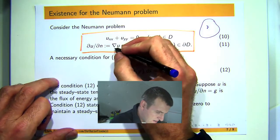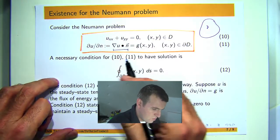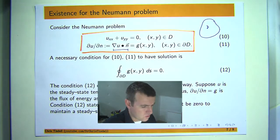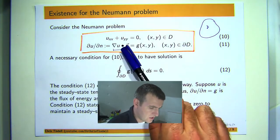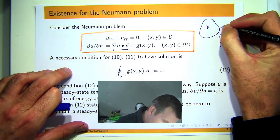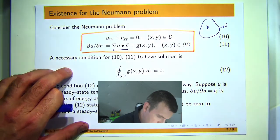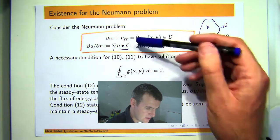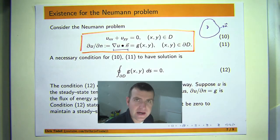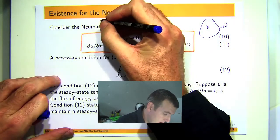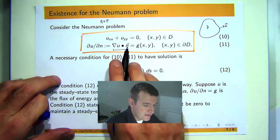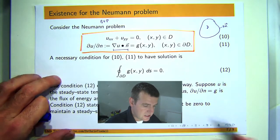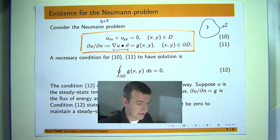This kind of condition where you've got the gradient of the solution dotted with an outward pointing unit normal vector is known as an exterior derivative or a normal derivative. And the two together are called a boundary value problem or BVP. Now this special condition here is actually known as a Neumann condition.